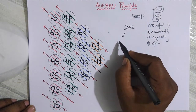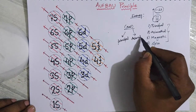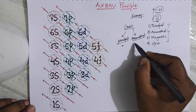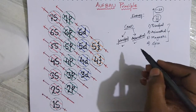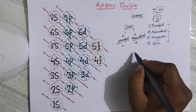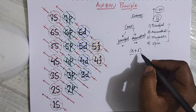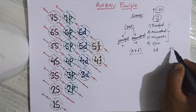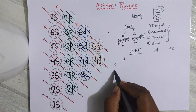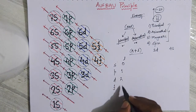In the n+l rule, n represents the principal quantum number (the shell the electron is in) and l represents the azimuthal quantum number (the orbital type). The azimuthal quantum numbers are: s = 0, p = 1, d = 2, and f = 3. So n+l is simply the addition of the principal quantum number and the azimuthal quantum number.